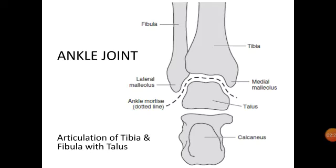So the second border is the facet of the medial malleolus, and the third border is the superior portion forming the inferior articular surface of the tibia and the superior margin of the talus. Looking further down, the talus articulates inferiorly with the calcaneus and anteriorly with the navicular bone.